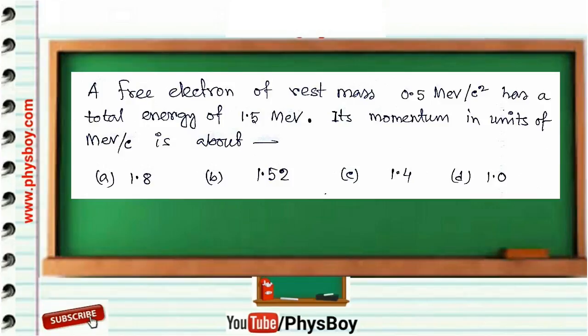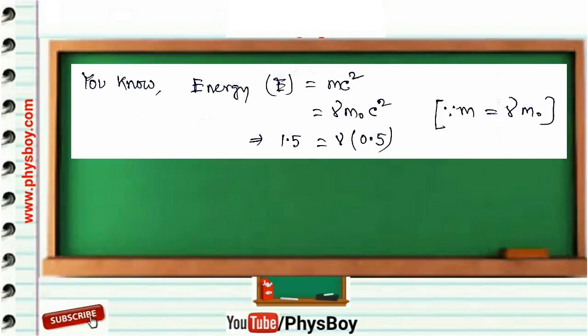Next question: a free electron of rest mass 0.5 MeV/c² has a total energy of 1.5 MeV. Its momentum in units of MeV/c is about: Option A: 1.8, Option B: 1.52, Option C: 1.4, Option D: 1.0. The energy E = Mc², where M is the relativistic mass.